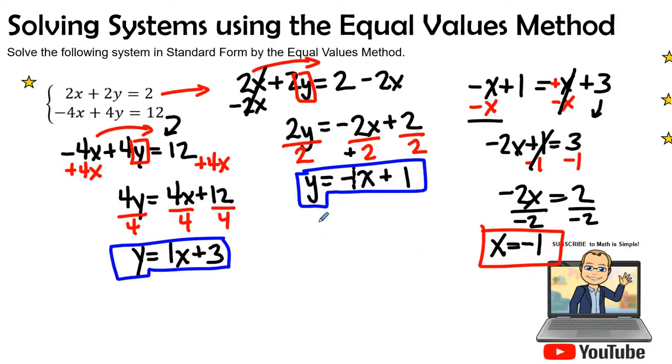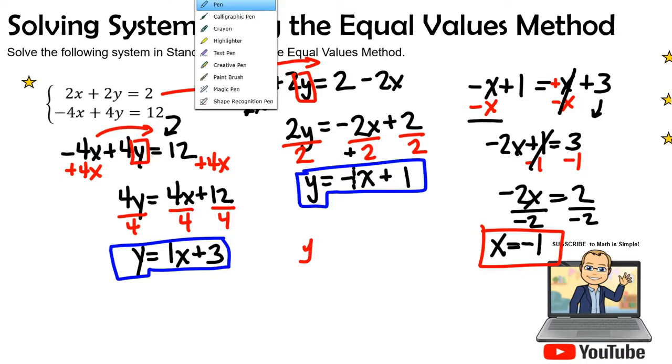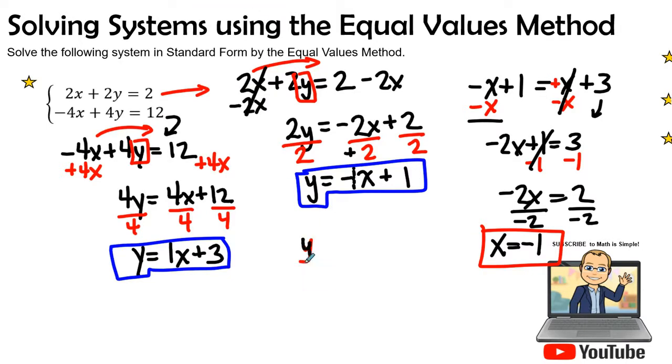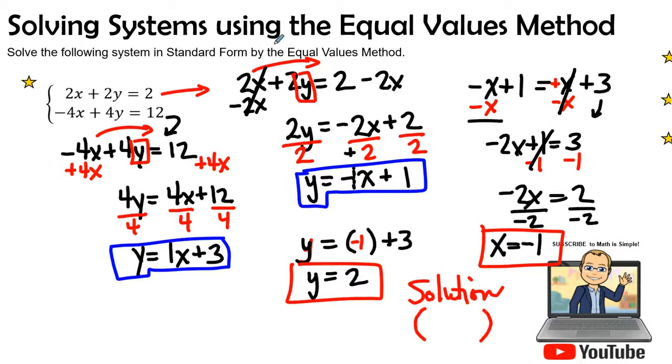Now we have to find our y value. I can plug it in, I'm going to plug this y value right here into x plus 3. So what is negative 1 plus 3? Well, y is equal to a positive 2. So our solution to this equation, or our ordered pair, is going to be negative 1 positive 2.